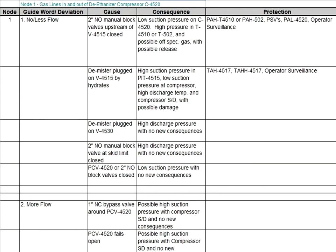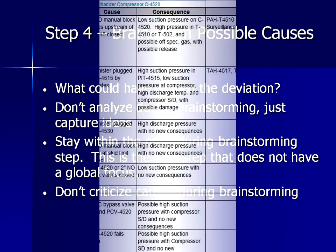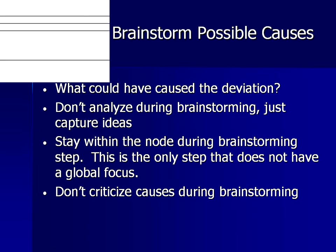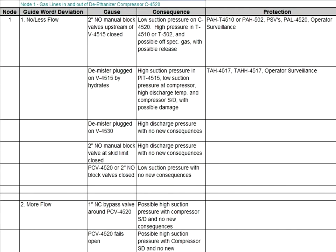Each deviation will be reviewed by the team. We will discuss the consequence of each deviation without any design safeguards, then we will discuss the protection included in the current design. In Step 4, we will brainstorm possible causes within the node which could cause the deviation. Don't analyze or criticize these causes — we just need to capture them. The scribe records the causes.